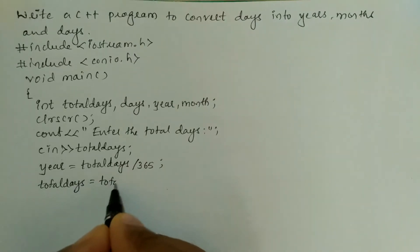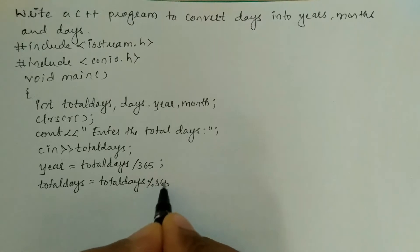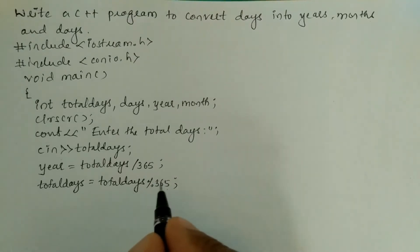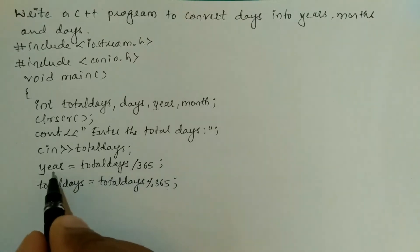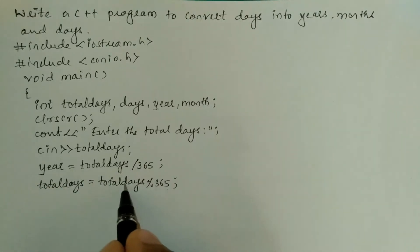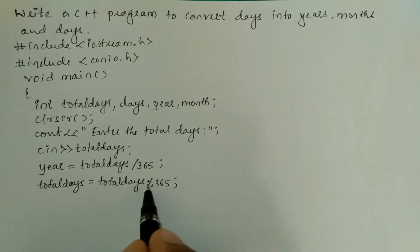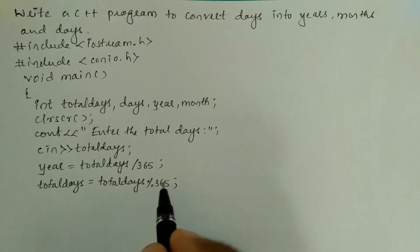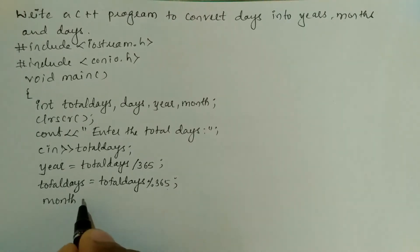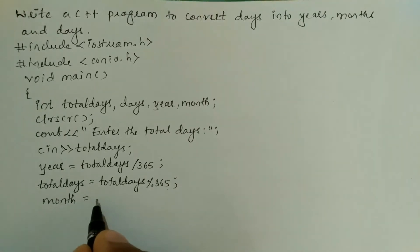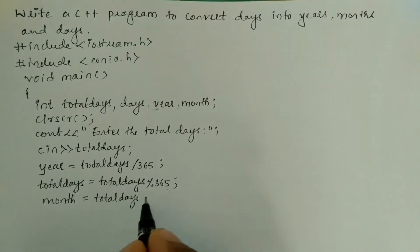Next, I write: total_days = total_days % 365; Modular division always gives us the remainder. So after removing the number of years from the total days, how many total days are left can be determined by total_days modulo 365.